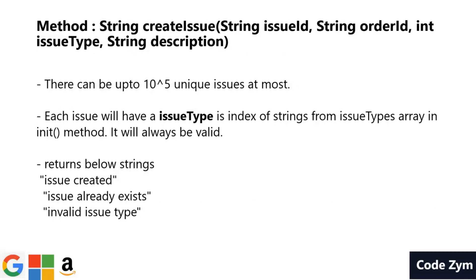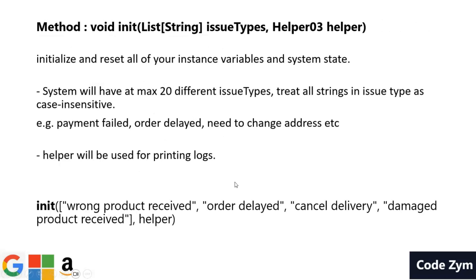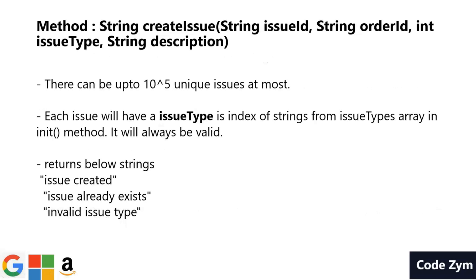The second method is createIssue. Each issue will have an issue ID, order ID, an issue type, and a description. Issue ID and order ID will always be non-empty. Issue type is an integer — if the value of issue type is 1, that means the issue is order delayed. So this int is an index from the issue types array. This method will return either 'issue created' or 'issue already exists' if an issue with that issue ID already exists, or 'invalid issue type' if the issue type is not within the range of that array.